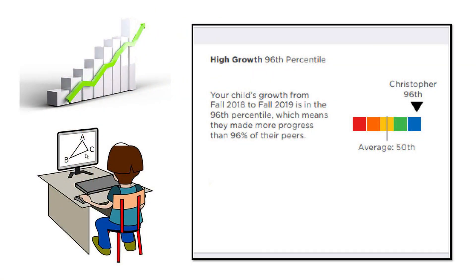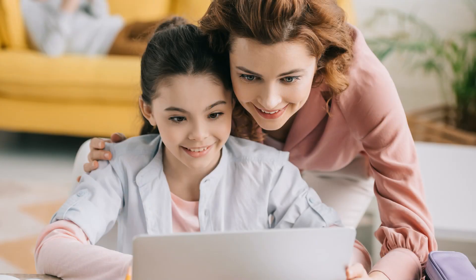Next to my graph is my growth percentile. My teacher says that's a fancy word for comparing how much I have grown to all the other students in my grade level and how much they have grown. She said there are thousands of students in my grade level all over the United States who take MAP. My growth percentile is in the blue, which means I made more growth than most of the students in my grade level. That's fantastic!